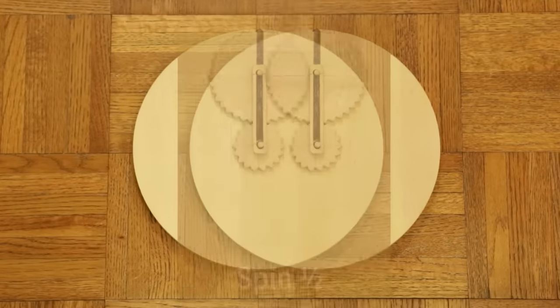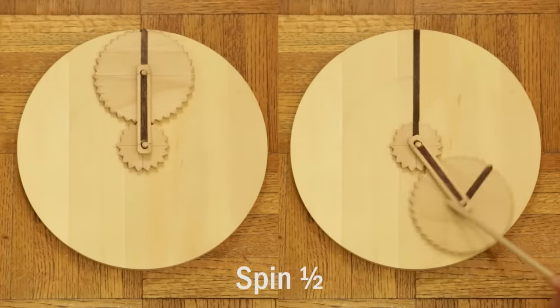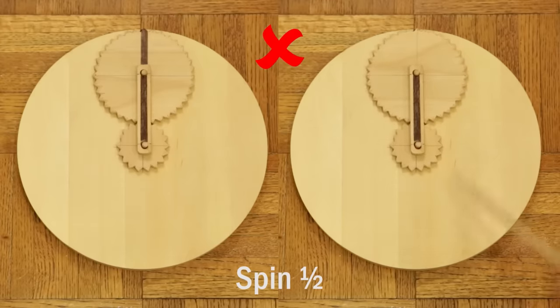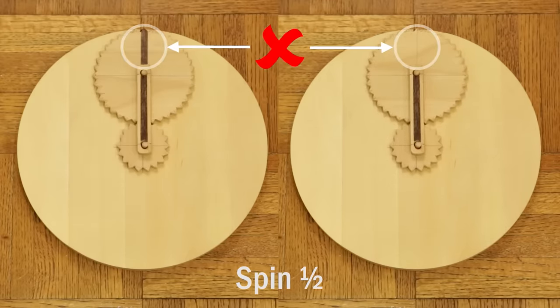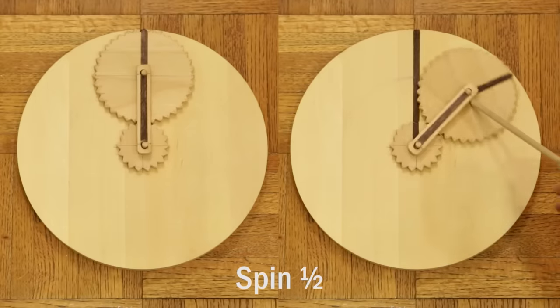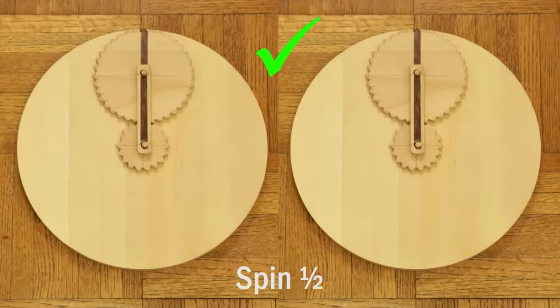But this unusual object has the property spin one half. When you rotate it through a full turn, it does not look the same as when you started. You have to rotate it through a second full turn to get it back to its original state. That's spin one half.